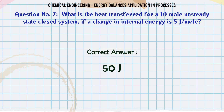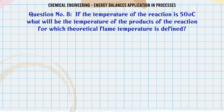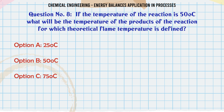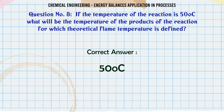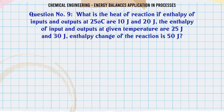If the temperature of the reaction is 50°C, what will be the temperature of the products of the reaction for which theoretical flame temperature is defined? A: 25°C. B: 50°C. C: 75°C. D: 100°C. The correct answer is 50°C.